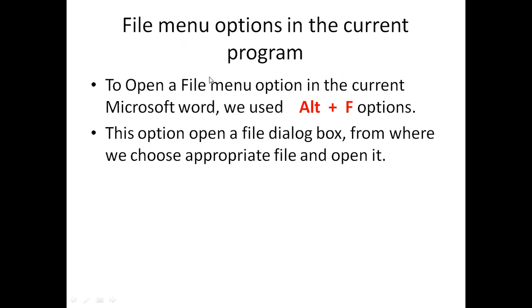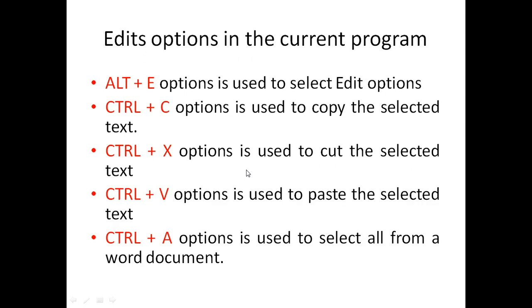First of all, I will describe the File menu options. To open the File menu options in Microsoft Word, we use Alt plus F. This option opens a file dialog box from where we can choose an appropriate file and open it.